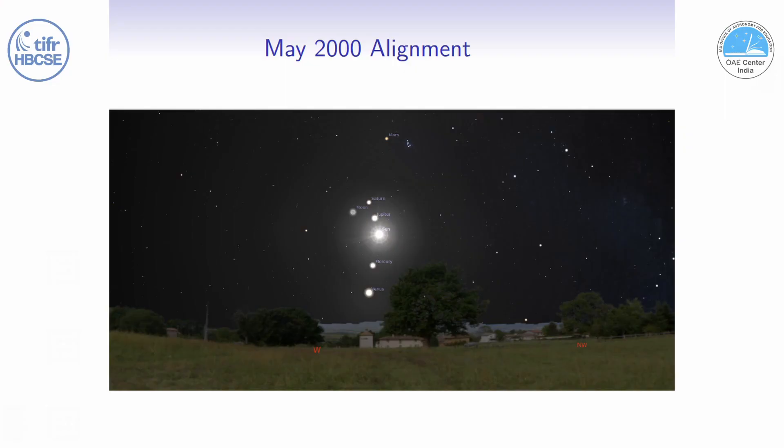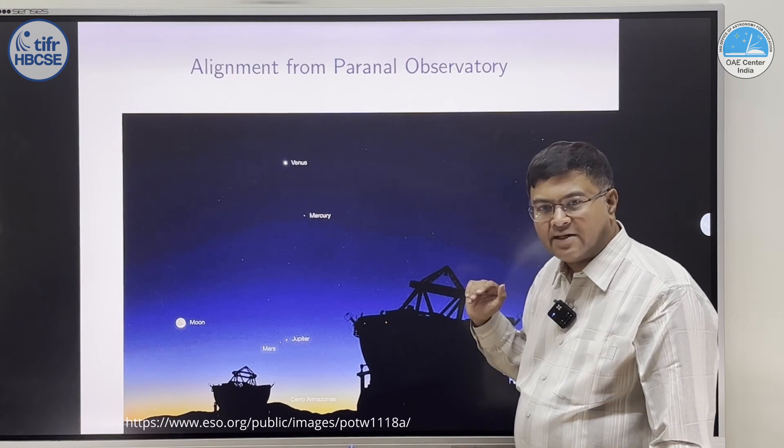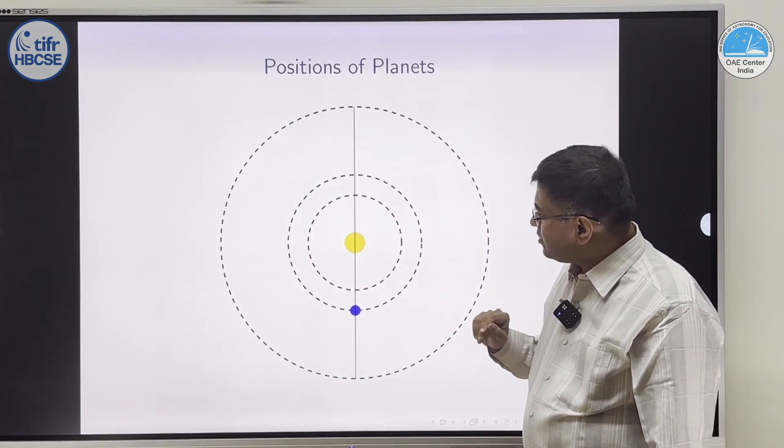Now, as an example, in May 2000, we saw that this position, this is, I have taken a screenshot from Stellarium. So, these are the examples of planetary alignment.